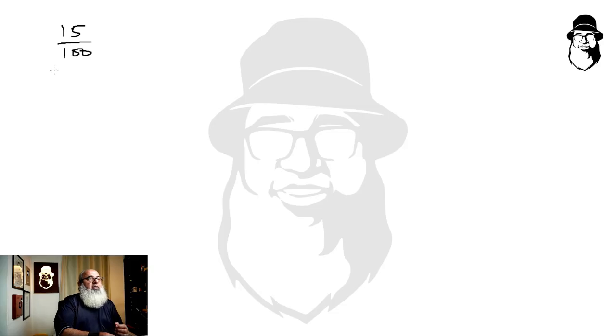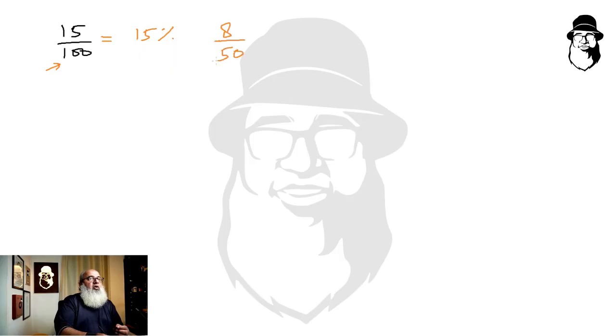To convert fractions to percentages, we multiply the top and bottom of the fraction so that we get hundred in the denominator. So if we have fifteen hundredths, the denominator is already hundred, so we simply write it as fifteen percent. If the denominator is fifty — say eight over fifty — we multiply top and bottom by two to get sixteen over hundred, that is sixteen percent.